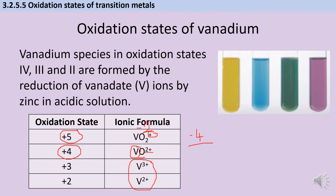Each of these oxidation states has a characteristic colour. Vanadium ions with an oxidation state of plus five make solutions bright yellow. As that's reduced to plus four, the solution goes blue. If you've done this practically, you may not have seen that blue colour clearly, because there's often some residual yellow, making it look green — but the first colour change is genuinely yellow to blue. Continuing the reduction with zinc gives the plus-three monatomic ion, which is green. And finally, vanadium with an oxidation state of plus two gives a really nice violet colour.